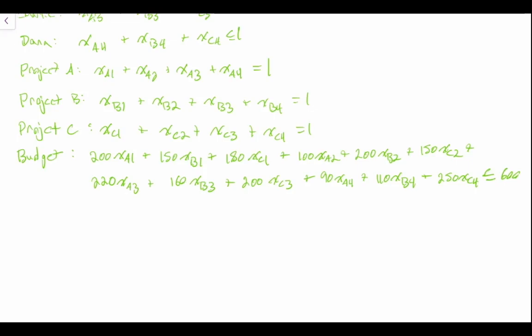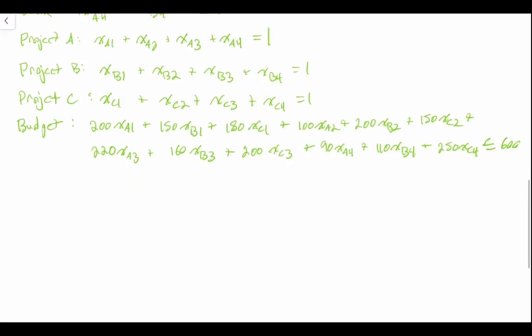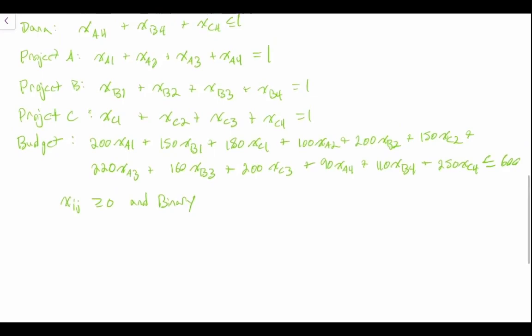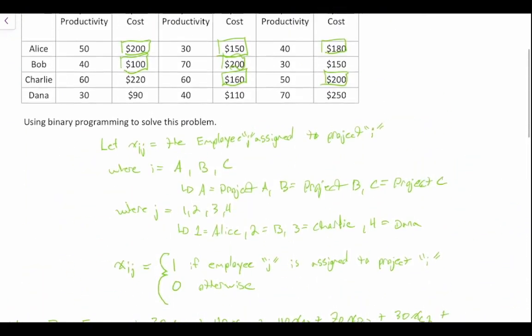And then we have our last one here. This is simply that Xij must be greater than or equal to zero, that's our non-negativity constraint. And then we will add one more and we're going to say end binary. And we will solve this in Microsoft Excel in the next video.